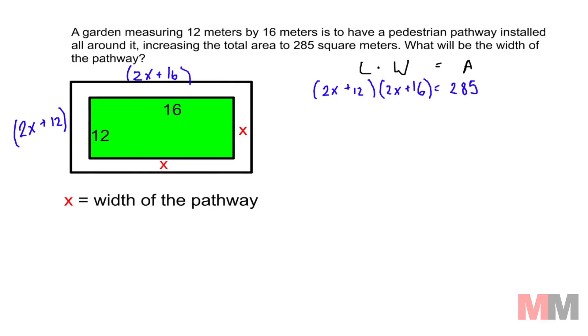So first thing you're going to want to do if you look at that is distribute out these binomials. 2x times 2x, that is 4x squared. 2x times 16 is a positive 32x. 12 times 2x, I like to write it under this when they're like terms, 24x. And 12 times 16 which is 192. And all of that equals 285.